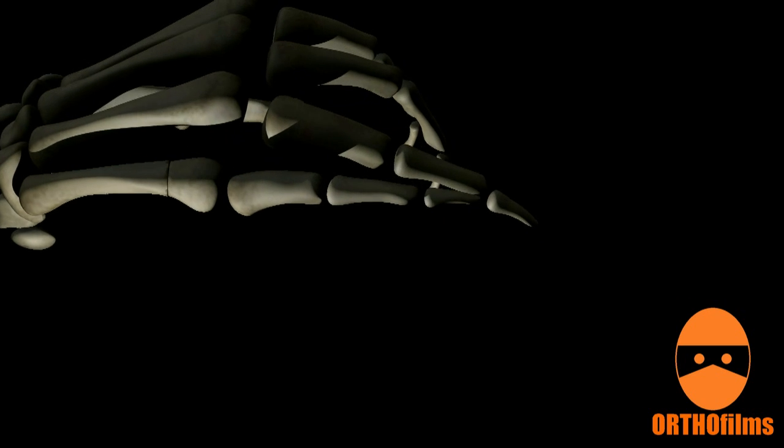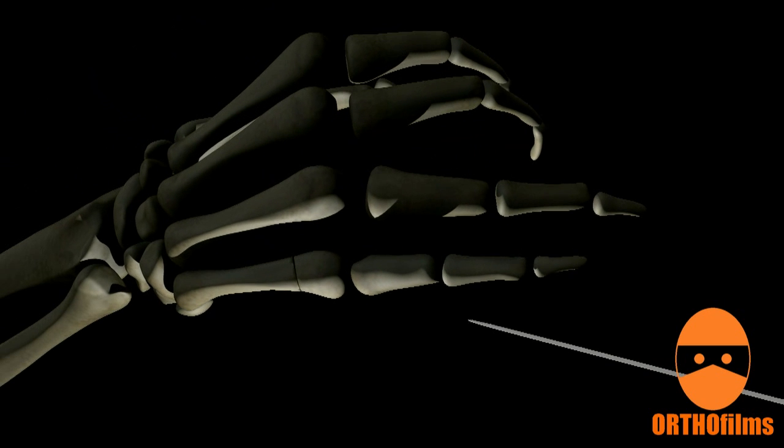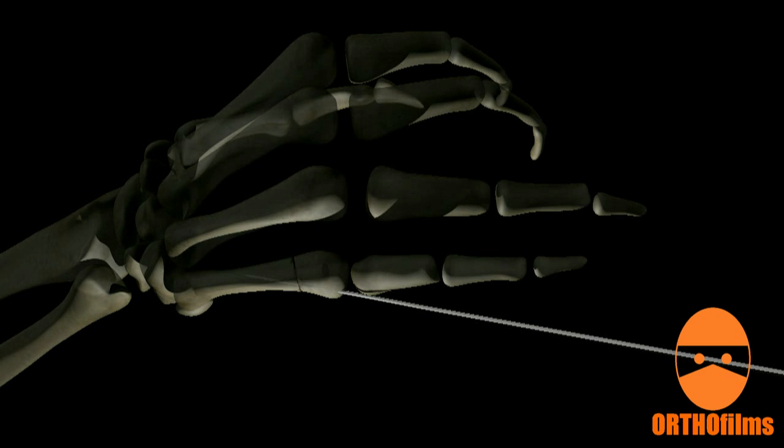Sharp pins, known as K-wires, are pushed through the skin and up against the bone. The K-wires are then drilled through the bone until they enter the medullary canal, the hollow center of the bone.